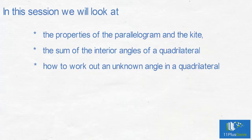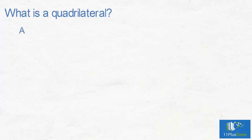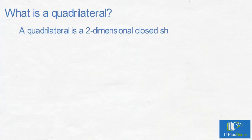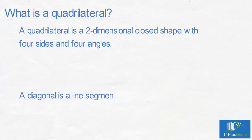For the properties of the different quadrilaterals, please see our video on two-dimensional shapes. What is a quadrilateral? A quadrilateral is a two-dimensional closed shape with four straight sides and four angles. A diagonal is a line segment drawn from one vertex of a quadrilateral to the opposite vertex.